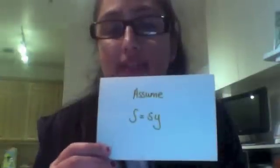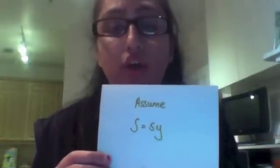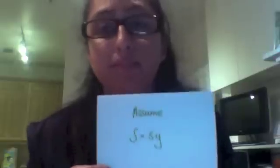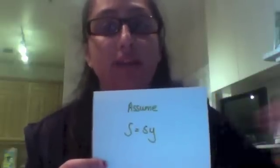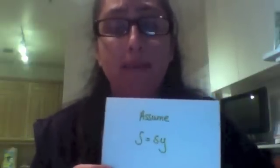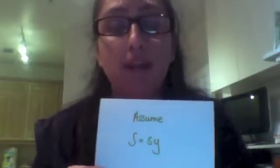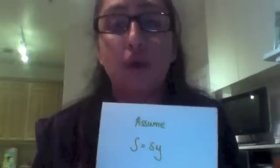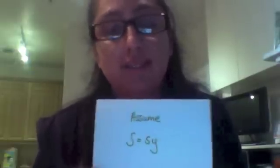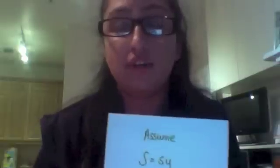Assumption number one: savings is equal to a function of national income. This makes perfect sense — if your national income is higher, there is more money around and more ability to save. Therefore S equals s·Y, which is a function of national income.